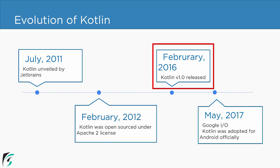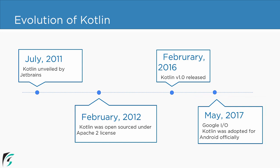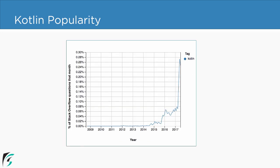One of the most significant events in the Kotlin timeline was May 2017, where at Google I/O, Kotlin was officially declared as an adopted language for Android application development alongside Java. This was the most spectacular event in the history of Kotlin. In the last few years, Kotlin has been getting a lot of attention and is being embraced by developers worldwide due to its outstanding features.